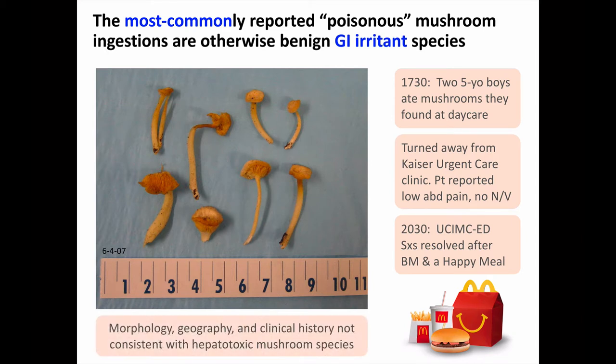In this case, the mushroom morphology, the geographic prevalence — that is, the absence of dangerous mushroom species in the area — and the clinical history were all inconsistent with hepatotoxic mushroom ingestion, and the patient was soon discharged. Poison control centers (PCCs) receive lots of calls about mushrooms of unidentified species which either cause no symptoms or self-limited GI distress. These exposures are often designated in PCC records as LBMs, or little brown mushrooms.